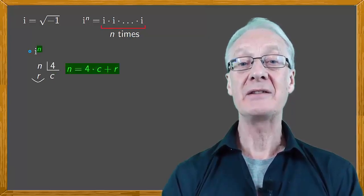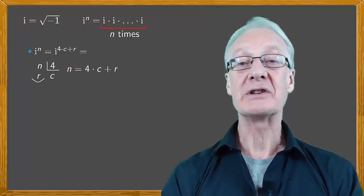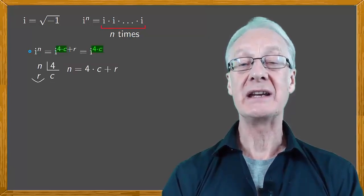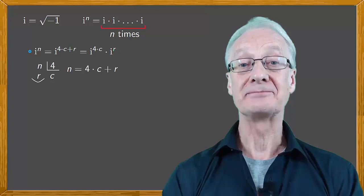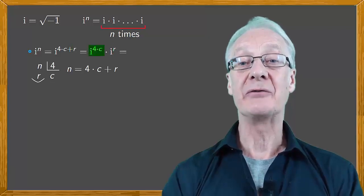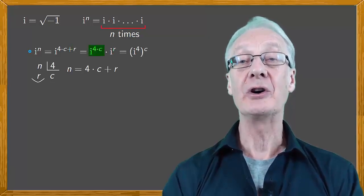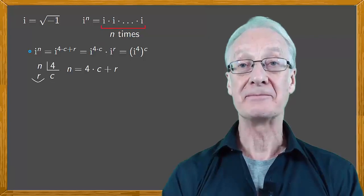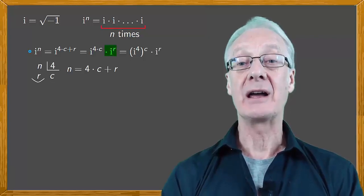Substituting this in i to the n, this is i raised to the four times c plus r, which is i to the four times c times i to the r. We can express i to the four c as i to the four, all raised to the c. And this is times i to the r.